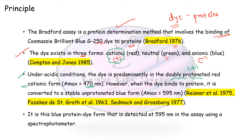When the dye binds to the protein, there is a change in the form of the dye. The protons added under acidic conditions are removed — the dye becomes unprotonated. This unprotonated form is stable and is the blue anionic form. So previously it was the red cationic form measurable at 470 nm, but after protein binding, it shifts to the unprotonated anionic blue form, and the absorbance is now measured at 595 nm.